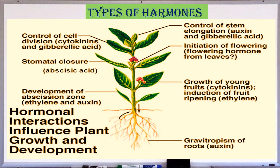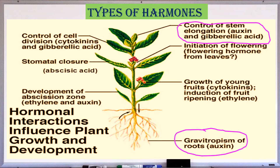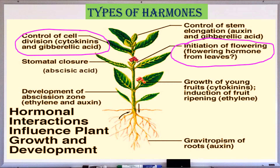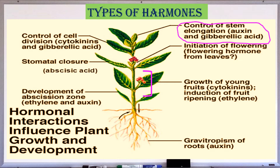Each phytohormone has a particular physiological function. Auxin plays a major role in cell elongation; it controls stem elongation and gravitropism of roots. Second, cytokinin — it controls cell division and inhibits senescence. Senescence means aging, and it initiates flowering.